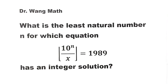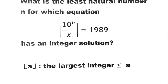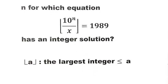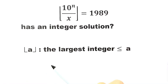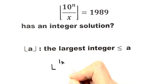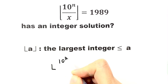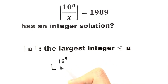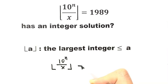The floor of a number a equals the largest integer less than or equal to a. So the equation we need to solve is: the floor of 10 to the power n over x equals 1989.